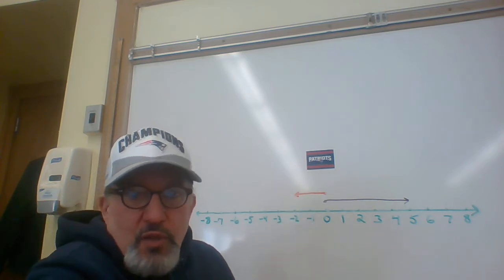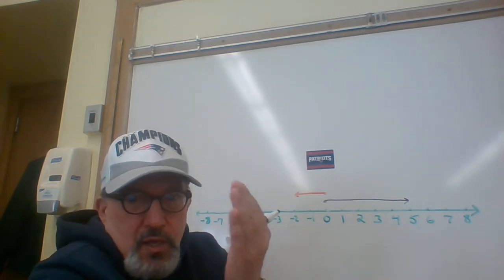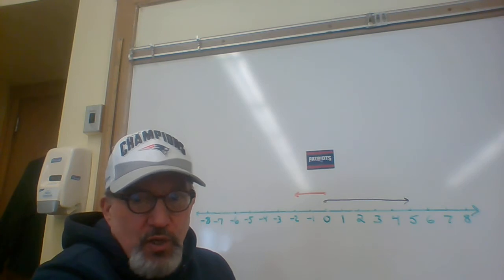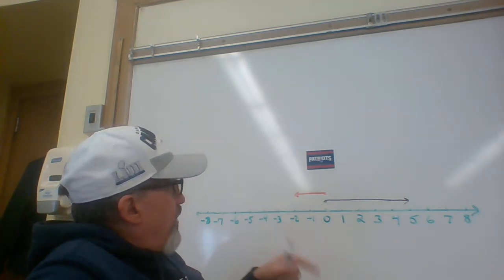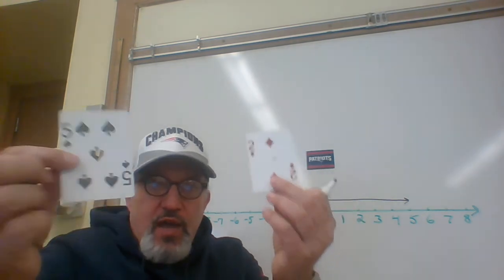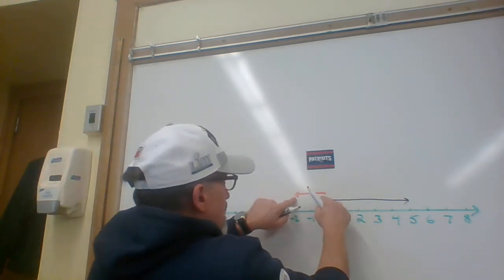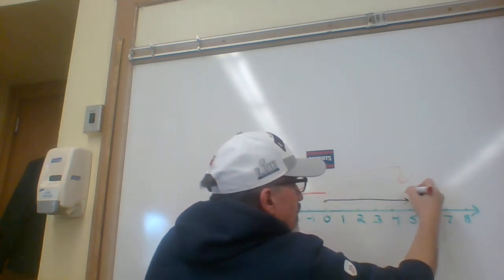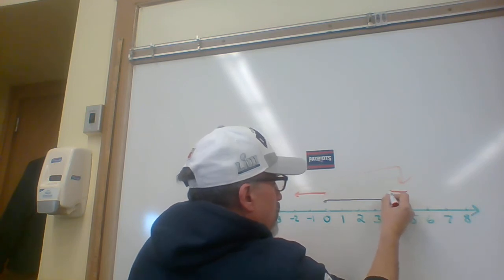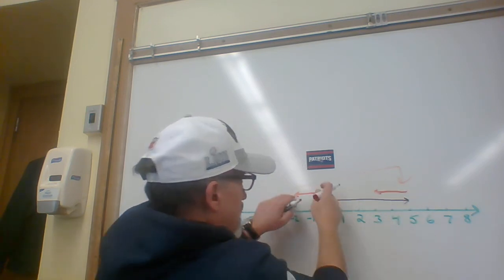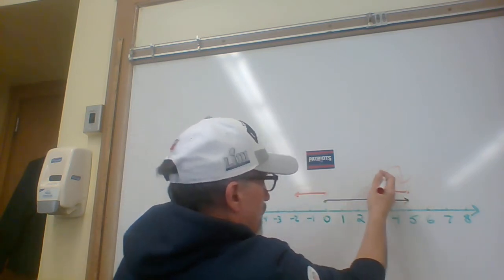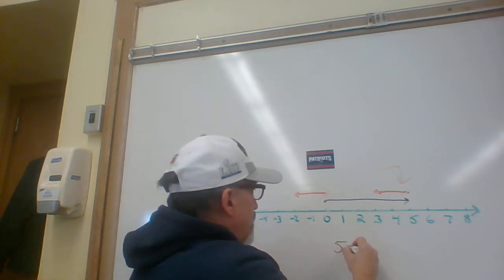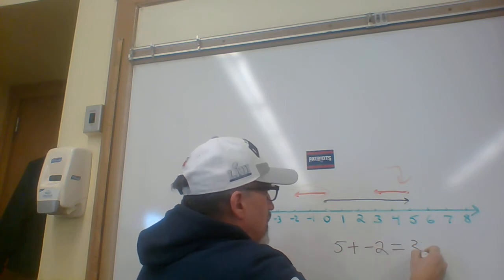Here's what is consistent about all the additions. We place one vector's beginning point at the other vector's end point. If we want to show 5 plus negative 2, we'll take this negative 2 vector and move it so that its beginning point is here and it's going to extend two units to the left like it did here. It's the same vector just moved over and of course it ends up at 3. What we just showed was 5 plus negative 2 equals 3.